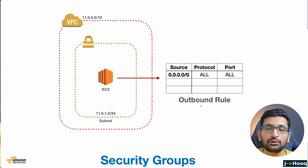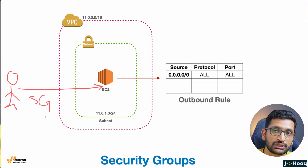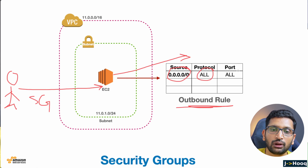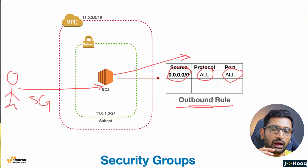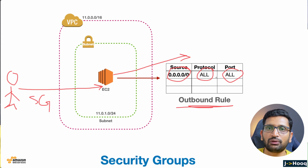We have seen the inbound security group rule. Similarly, there are outbound security group rules as well. If I try to access an EC2 instance, the inbound rule validates my incoming request, but there will also be a similar outbound rule. If a request is going out from the EC2 instance, I will have an outbound security group rule where I define the source, protocol, and port. Generally outbound rules are a bit more lenient, but there are certain scenarios where you need to set outbound rules to control outgoing requests via security groups.